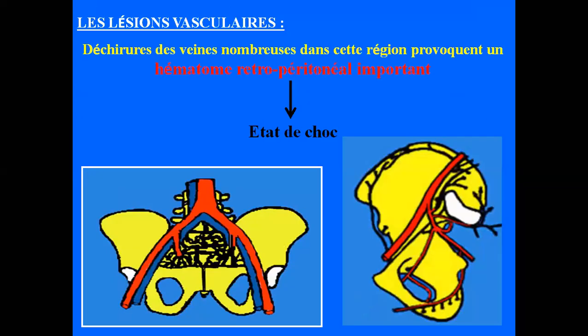Autre complication possible : les complications vasculaires. De nombreuses veines et artères tapissent le bassin, et l'os du bassin est un os spongieux qui va lui-même saigner abondamment. Ces déchirures de veines et ces déplacements osseux sont responsables d'une perte sanguine. Cette perte sanguine va donner un hématome sous- et rétropéritonéal — non intrapéritonéal — qui peut être très important et responsable d'un état de choc.